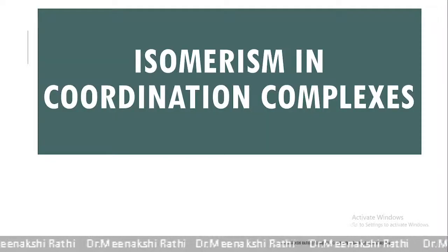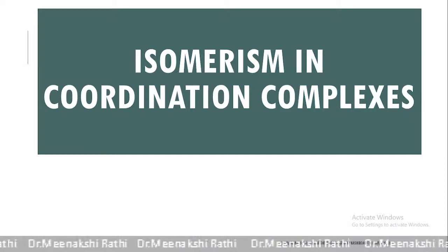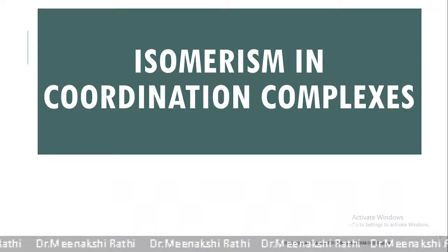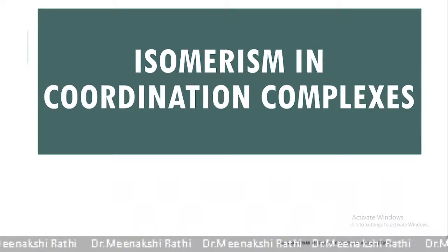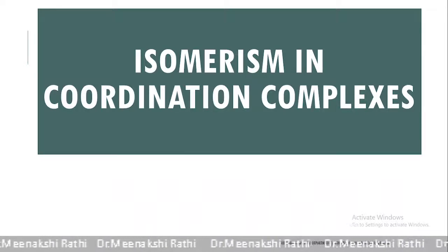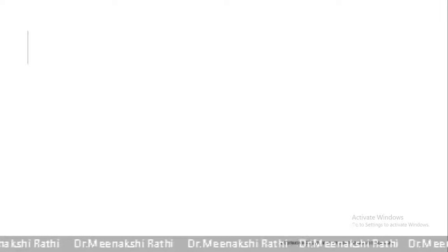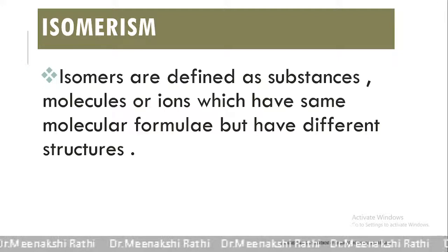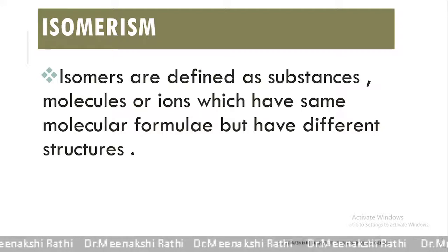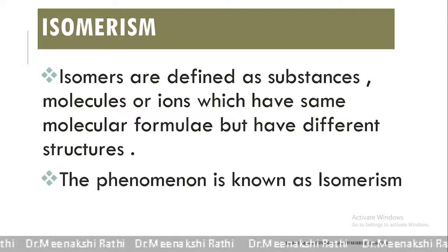Today I am going to discuss about isomerism in coordination complexes. The study of isomerism has made it possible to support the evidence used by Werner to prove that 6-coordinated complexes like those of cobalt were always octahedral and 4-coordinated complexes were mostly square planar. Isomers are defined as substances, molecules or ions which have the same molecular formula but different structures, and this phenomenon is known as isomerism.